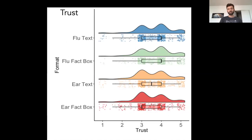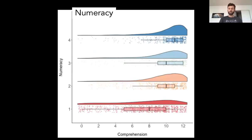Looking at comprehension across formats — influenza text, influenza fact box, ear text, ear fact box — both fact box conditions showed slightly higher comprehension than text. Trust ratings looked fairly similar across conditions. On an objective numeracy measure, people with numeracy levels 2, 3, and 4 had fairly similar comprehension, with level 4 a little better; people with the worst numeracy had lower comprehension.